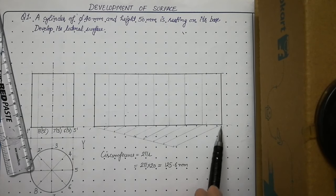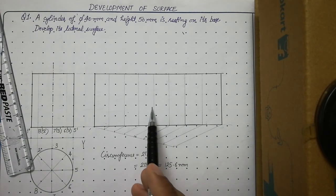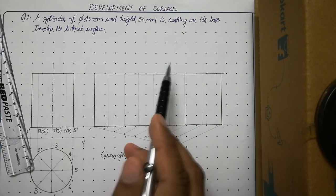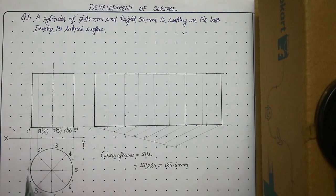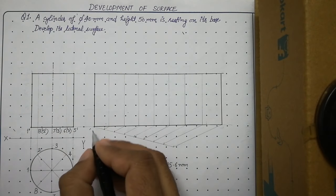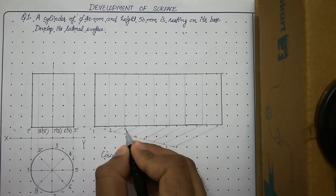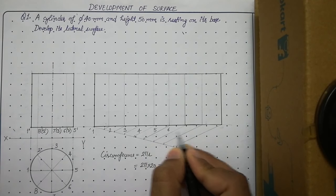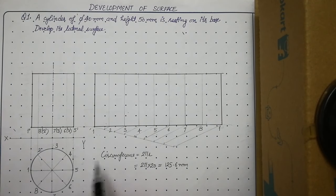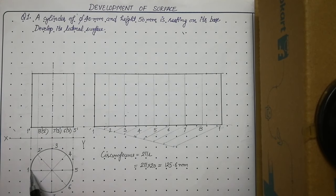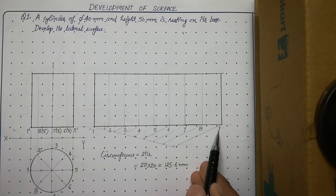Now name these generators inside the development. We assume the cylinder was opened from generator 1, so label them: 1st, 2nd, 3rd, 4th, 5th, 6th, 7th, 8th generator. Remember the last generator will also be labeled 1, because when you open the surface of the cylinder from a particular generator you come back to the same point — so the starting and ending point of the development are the same.